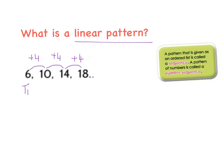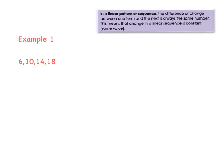So a linear pattern is a sequence of numbers whose common difference, so CD, is the same or constant. In a linear pattern or sequence, the difference or the change between one term and the next is always the same number, and we refer to that as a constant, the same value.